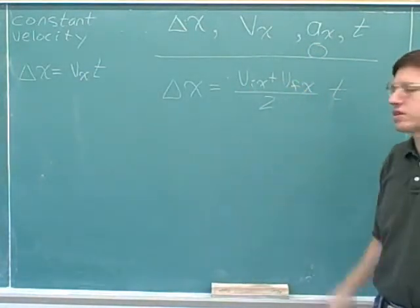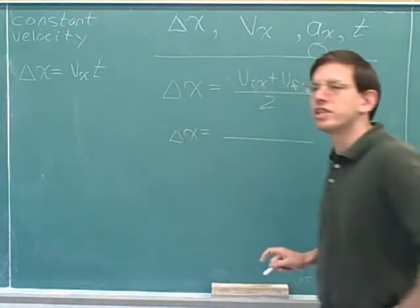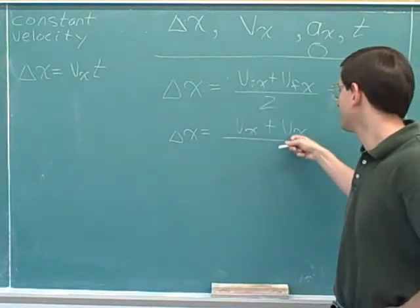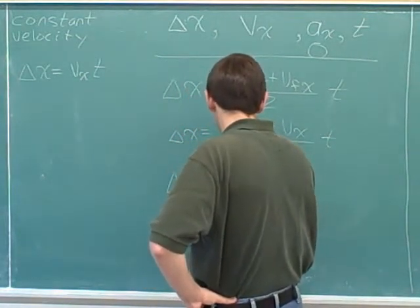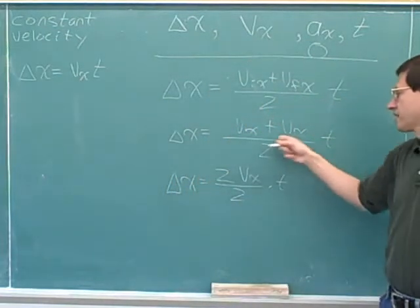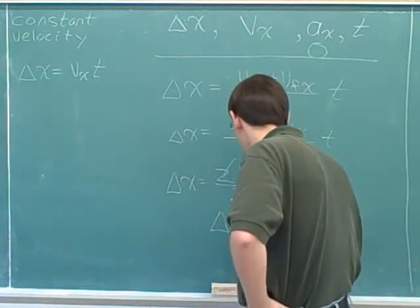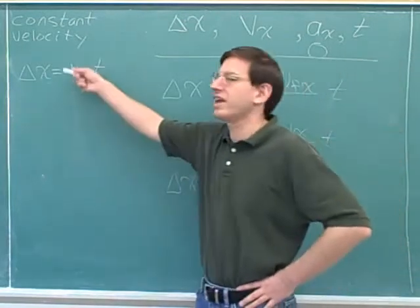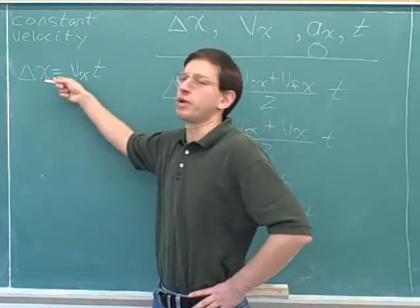We've seen how these equations don't tell us anything we didn't already know. How about this equation? What happens to this equation when we have constant velocity? Well, remember that we don't really need separate symbols for the initial and final velocity anymore. We can just call both of them velocity, using the same symbol since they are the same. After some simple algebra, adding Vx plus Vx gives 2Vx, and these 2s cancel, giving us the equation that is just our distance equals rate times time.